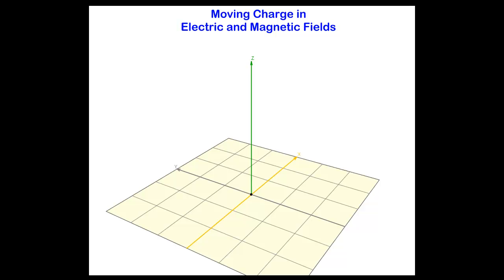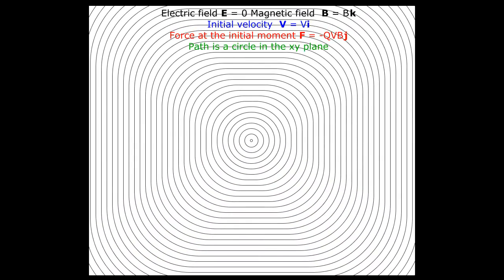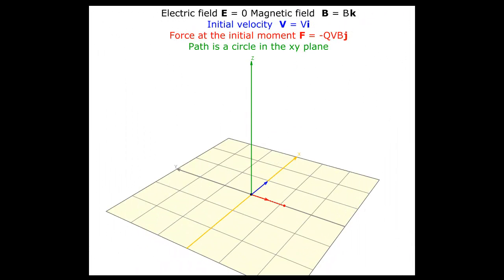This animation shows the paths followed by a charged particle in different combinations of electric and magnetic fields. The initial velocity is along the x-axis and the magnetic field is in the z-direction. The force on the charged particle is in the direction of the cross product of velocity and magnetic field vectors, and is along the negative y-axis at the initial moment.